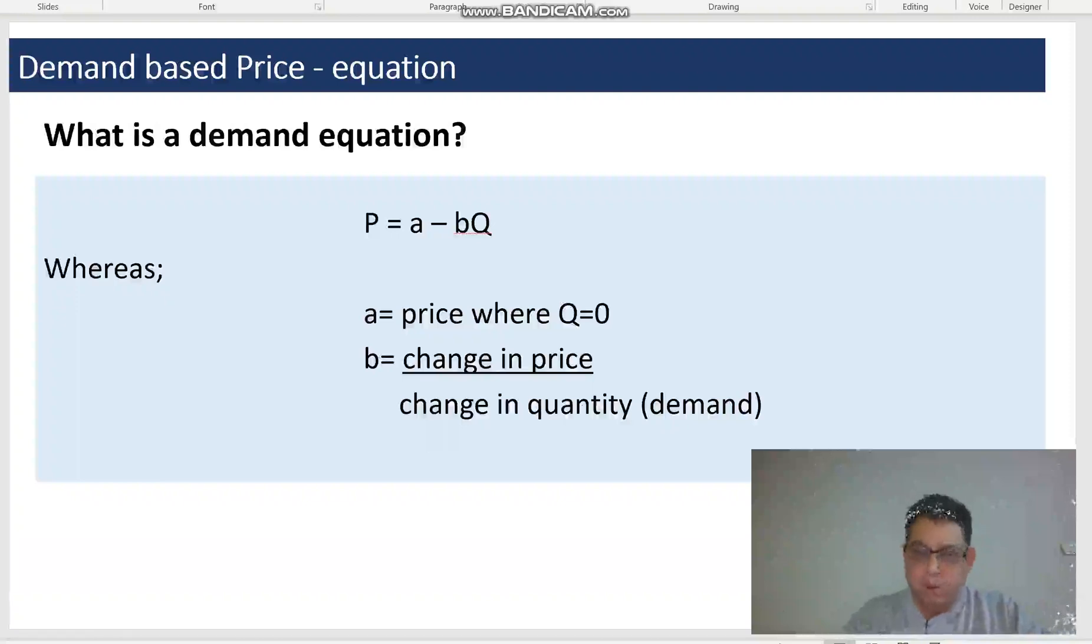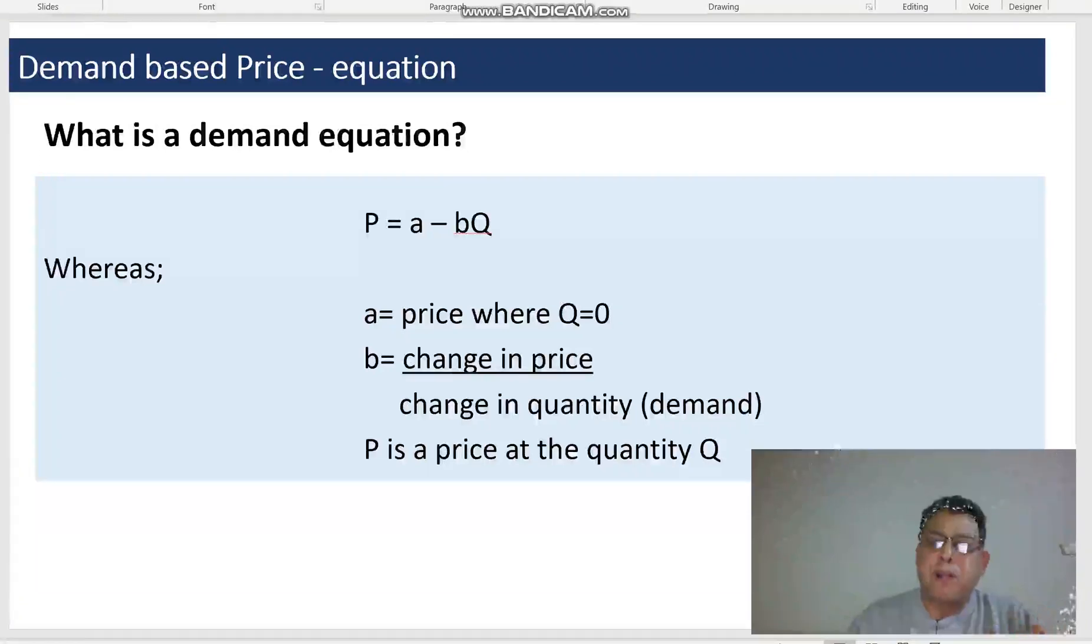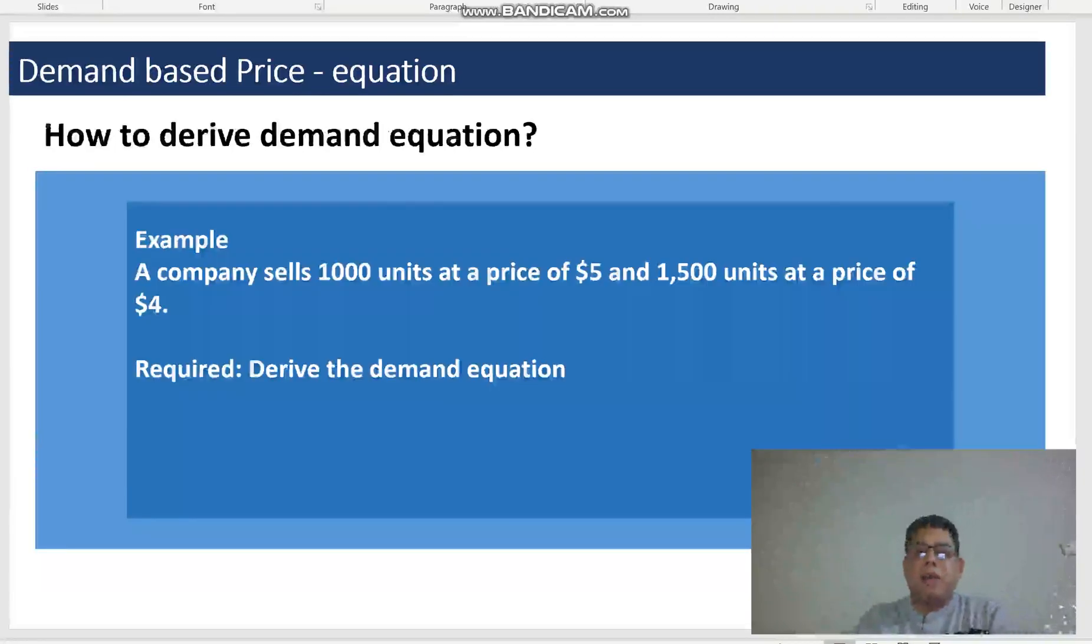Quantity can be replaced as demand, and P and Q are not interpreted isolately. So we say P is the price at the quantity or at the demand Q, or Q was the quantity sold when we charged the price of P. So both are considered as a pair, and this pair cannot be isolated, cannot be interpreted alone. Let's have a look at a little example we can use to calculate or derive the demand function of any product.